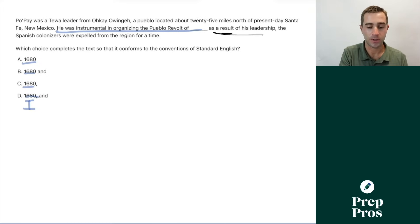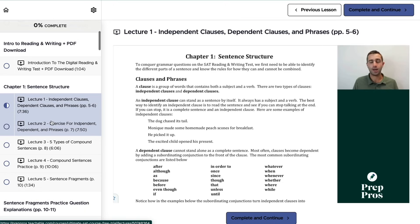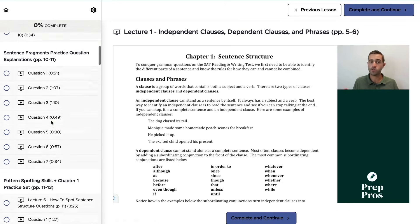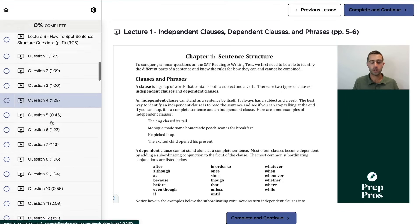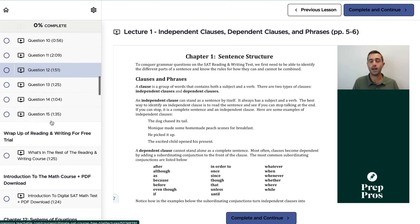Now we have the Spanish colonizers were expelled from the region for a time. That's another independent clause. Since we have two independent clauses, we have two full sentences. So the only answer choice which is properly going to join those two is the comma plus our fanboys. If you aren't familiar with independent clauses, dependent clauses, and phrases, and any of the basic rules around how we can join those together, please check out the free trial of my ultimate SAT course. You're going to learn all of that and get a lot of practice, which can help give you a really good foundational base to have a shot at answering these more advanced questions correctly.